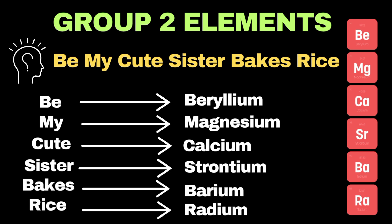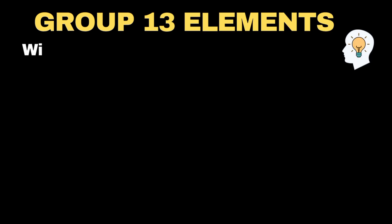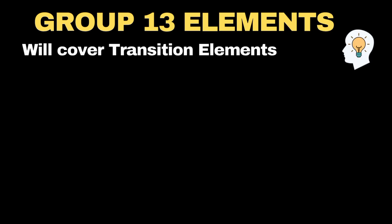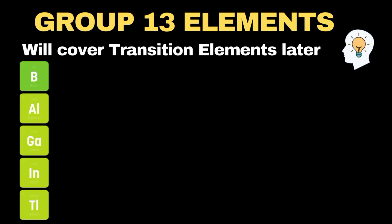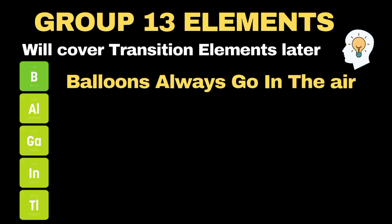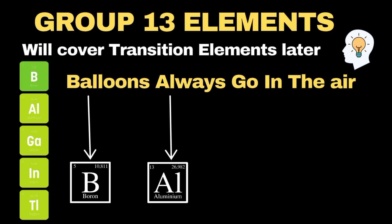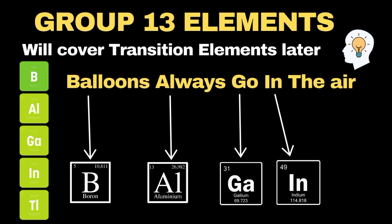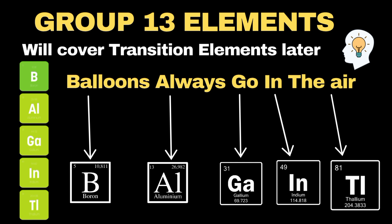Now it's time to move towards group 13 elements. Keep in mind that we will also cover transition or D-block elements after completing subgroup A or normal elements. To memorize group 13 elements, remember this mnemonic: 'Balloons always go in the air.' Here 'balloons' represents boron, 'always' mentions aluminum, 'go' stands for gallium, 'in' represents indium, and 'air' is used for thallium.